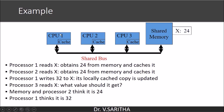Now CPU 1 writes and updates the value x to 32. At this point, CPU 2 does not have the updated data — it will still have 24, and the shared memory will also still have 24. So if CPU 3 reads the value of x at this point, it still reads it as 24, not 32, which was updated in CPU 1. We can see that there is inconsistency here.